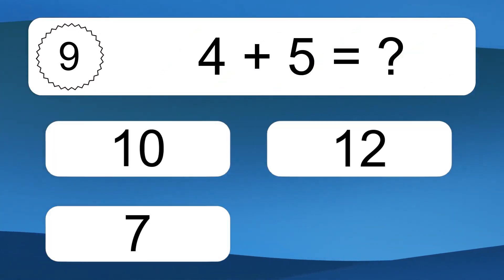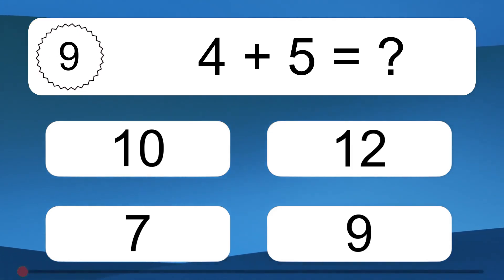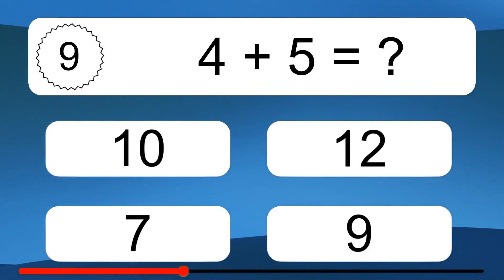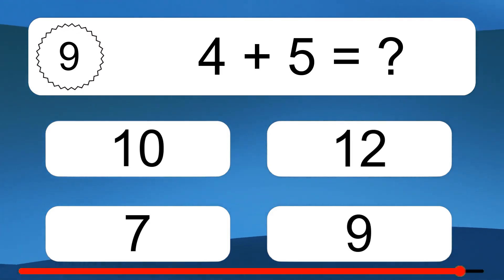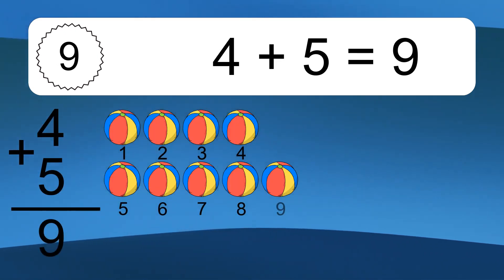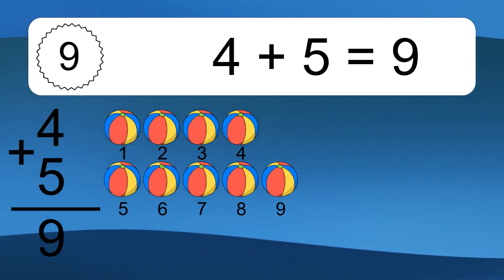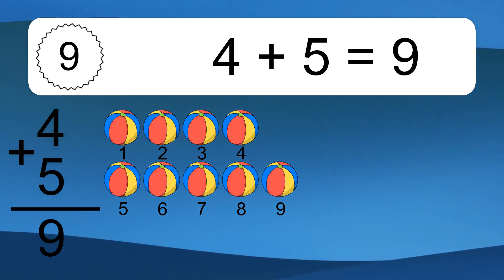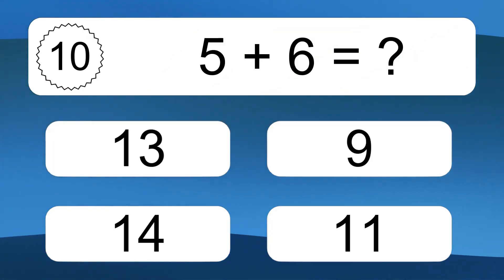Four plus five equals what? Four plus five equals nine. Let's count it: one, two, three, four, five, six, seven, eight, nine.